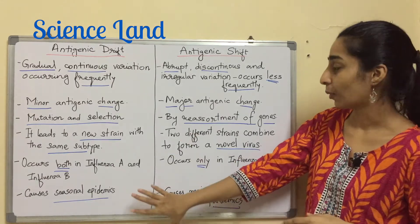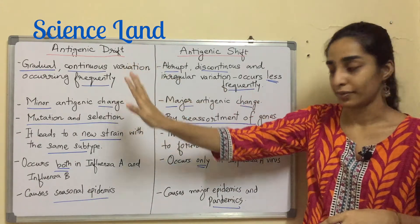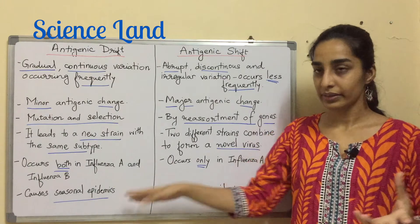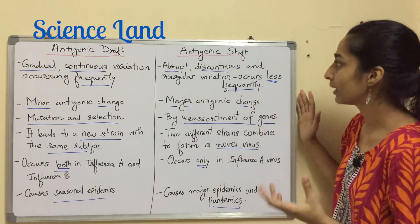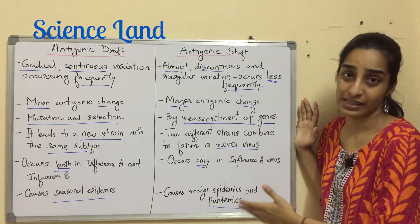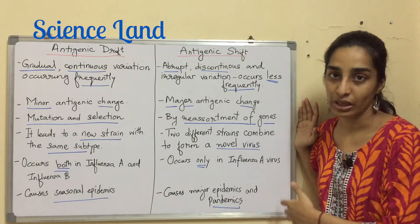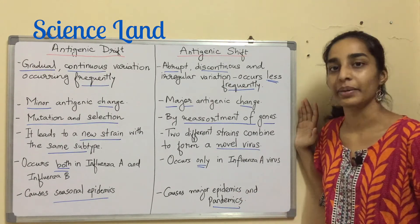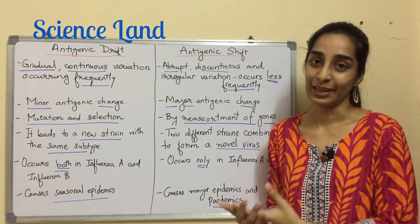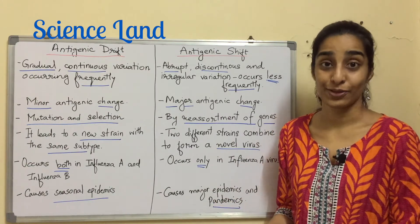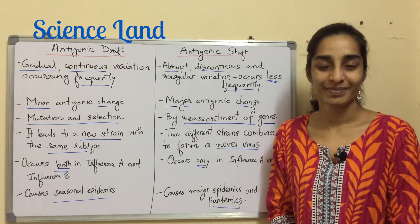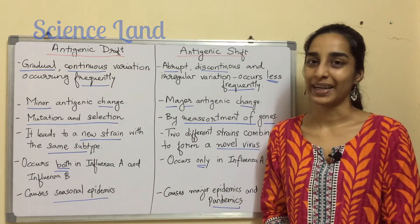And the last point is that antigenic drift causes seasonal epidemics, while on the other hand, antigenic shift causes major epidemics and pandemics. So that's the distinction between antigenic drift and shift. I hope this helps you. Thank you so much for watching. Bye-bye.